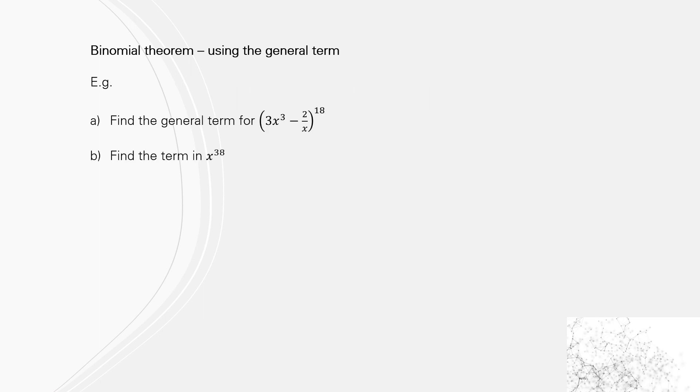We're going to look at one example. Find the general term for (3x³ - 2/x)^18, and then find the term in x^38.